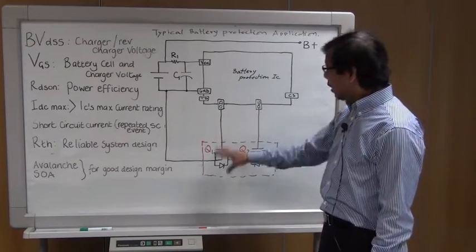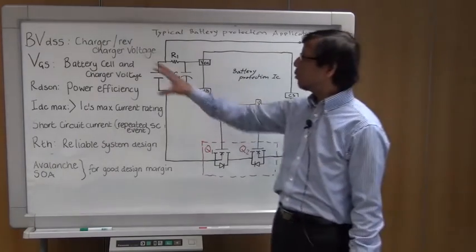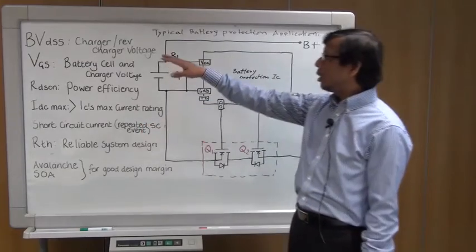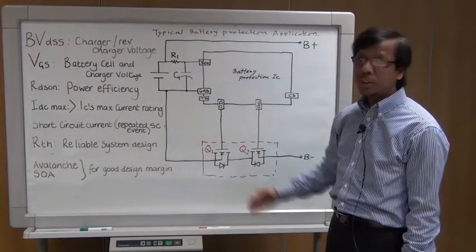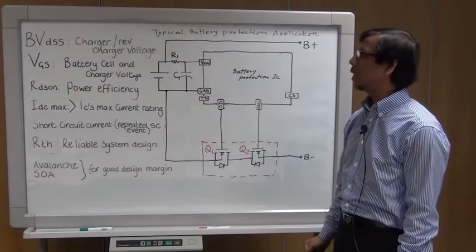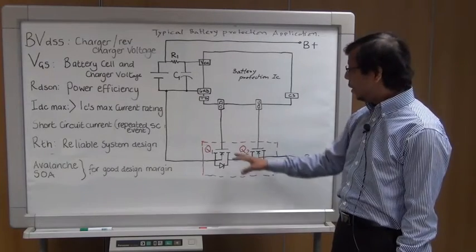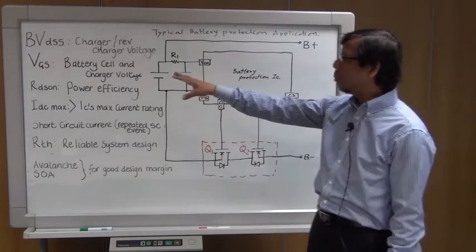In selecting those power MOSFETs, you'll have to go for the breakdown voltage which is based on the charger and reverse charger voltage. Breakdown voltage must be higher than that, and the gate source voltage capability must be more than the battery cell and charger voltage, because charger voltage can appear during the turning on and off of the MOSFETs.